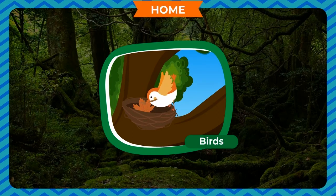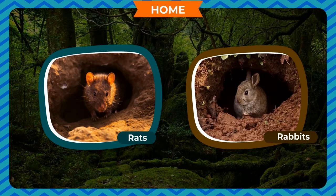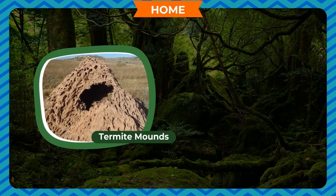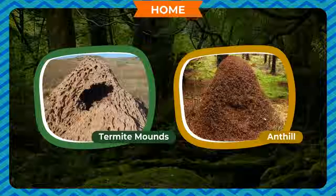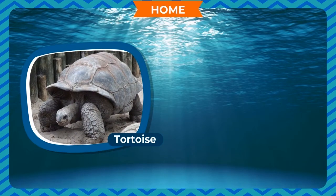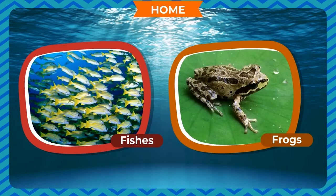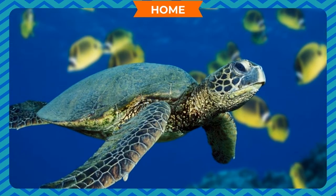Some animals such as rats, rabbits, etc. make burrows or holes in the ground to live. Termites and ants make termite mounds and anthills. Some animals such as tortoise, crocodiles, fishes, frogs, etc. live in water. These animals are known as water animals.